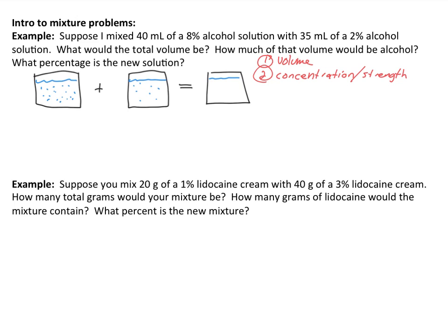I'm going to label each one. Typically what I do is underneath each cylinder I just write the volume. So the volume of this first cylinder — this is the 40 milliliter solution — and I'm mixing that with a 35 milliliter solution. I don't know what the new solution's volume is yet. This first container has a concentration of 8%; this is an 8% solution. The second, for the 35 milliliters, is a 2% solution — just making sure I know the volume and concentration of what I'm mixing.